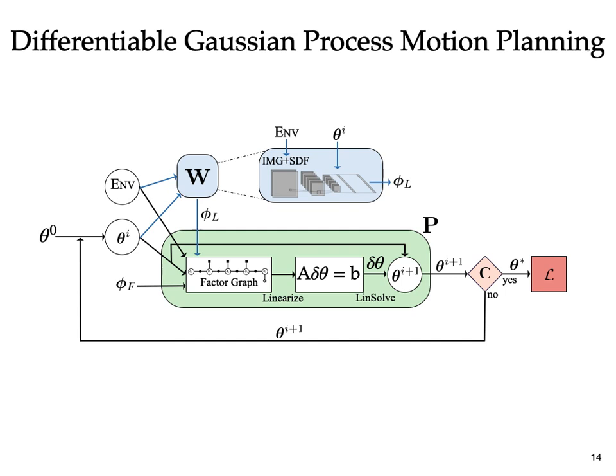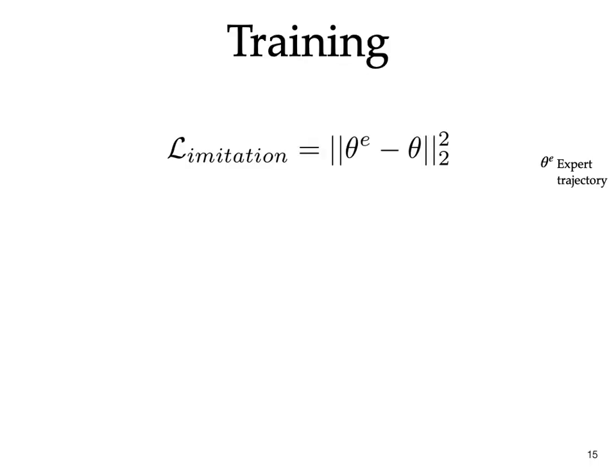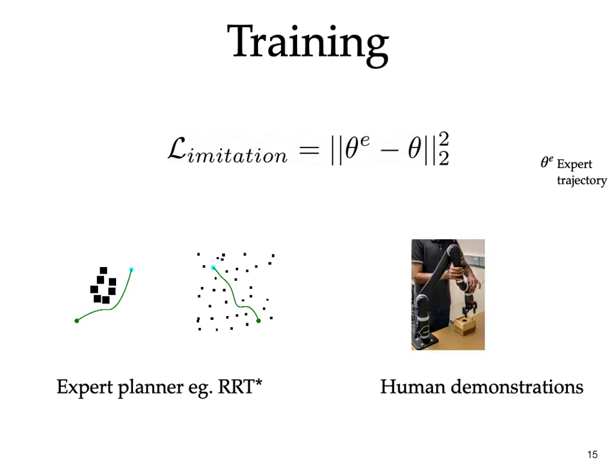Next up, we discuss the loss functions used for training. The first component of the loss function is based on deviation of the planned trajectory from an expert trajectory, which can be generated either by a slow expert planner such as RRT star, which is what we do in the current experiments, or from human demonstrations if available.